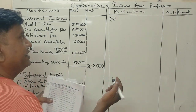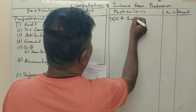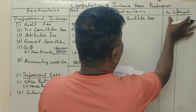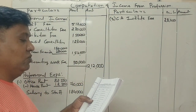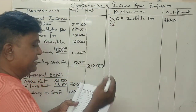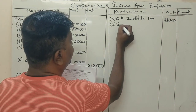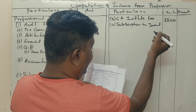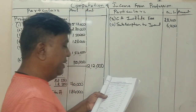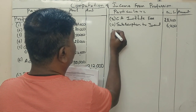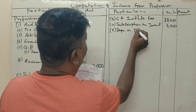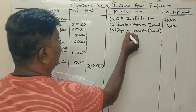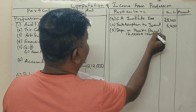CA Institute membership fees: 28,000. Subscription to journal: 6,000 rupees. Professional books — 100% depreciation applies. Total books cost: 12,000 rupees, so depreciation on books: 12,000 rupees at 100%.